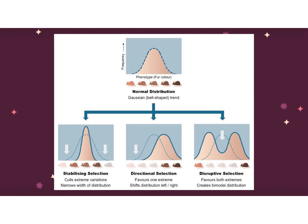Remember that AP loves these graphs. It is important for you to know the stabilizing, directional, and disruptive selection graphs — not only what's happening, but stabilizing is toward the middle, directional shifts the whole curve, and disruptive has that bend in the middle. It's important to know an example of each and how the curves look and change. It's very likely you will see these graphs on the test.